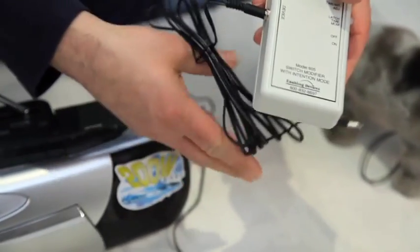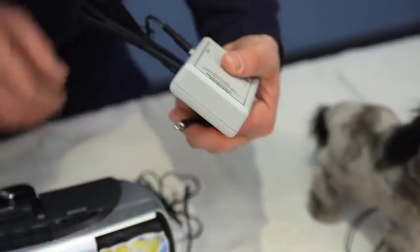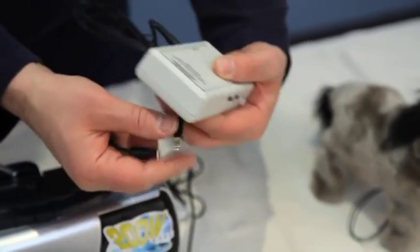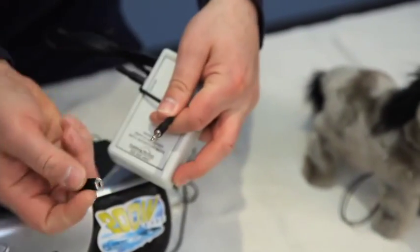Cable from the switch modifier into your device jack, plug the other end of this cable into the battery interrupter jack. On the 605, turn it on and I'm going to use it in the latch mode.